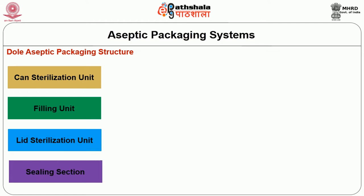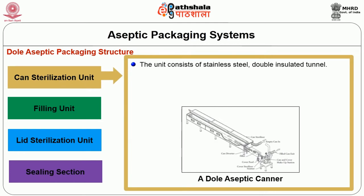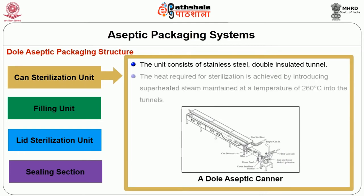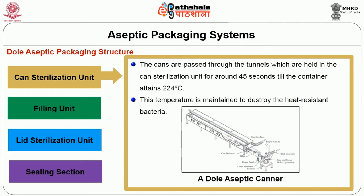The first unit is the can sterilizing unit. The unit consists of a stainless steel double insulated tunnel. The heat required for sterilization is achieved by introducing superheated steam maintained at a temperature of 260 degrees Celsius into the tunnels. The cans are passed through the tunnels and held for around 45 seconds until the container attains 224 degrees Celsius. This temperature is maintained to destroy heat resistant bacteria.